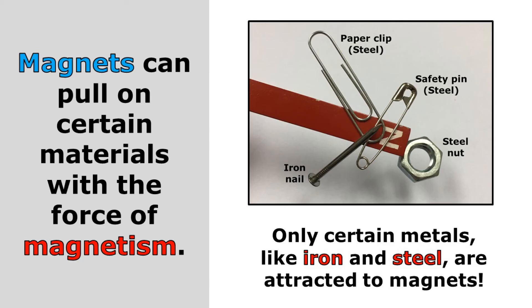Magnetism is another force, and magnets can pull on certain materials with the force of magnetism. But only certain metals like iron and steel are attracted to magnets.